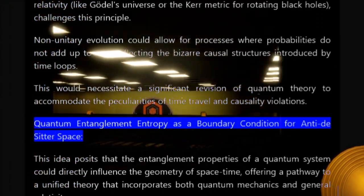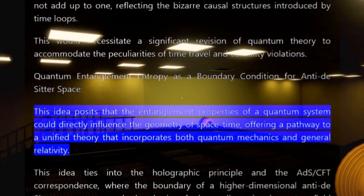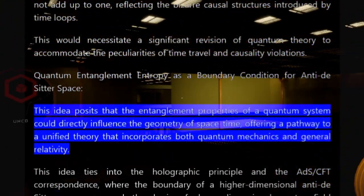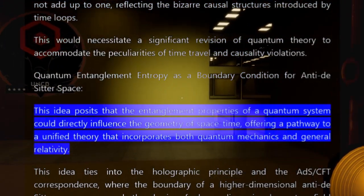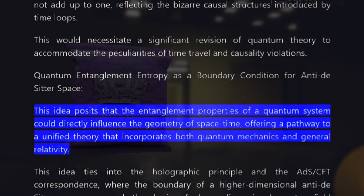Quantum entanglement entropy as a boundary condition for anti-de Sitter space. This idea posits that the entanglement properties of a quantum system could directly influence the geometry of space-time, offering a pathway to a unified theory that incorporates both quantum mechanics and general relativity.